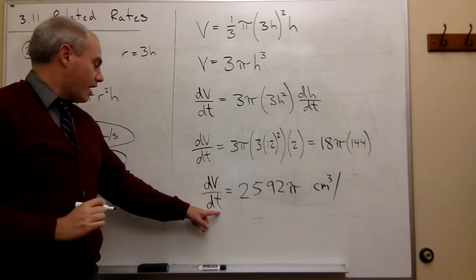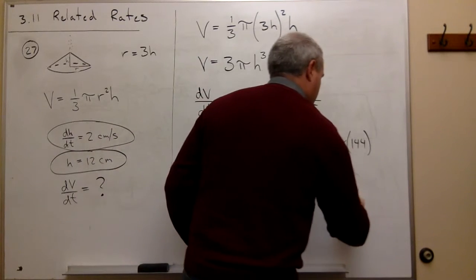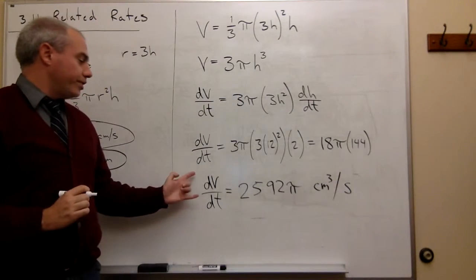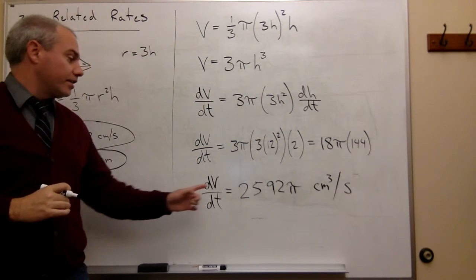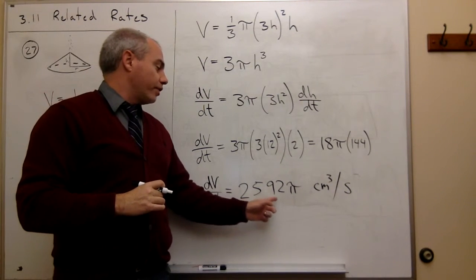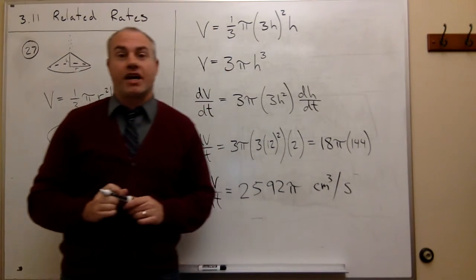per time, and time in this problem is measured in seconds. And so the rate of change of the sand that is being dumped onto this pile is two thousand five hundred ninety two pi centimeters cubed per second.